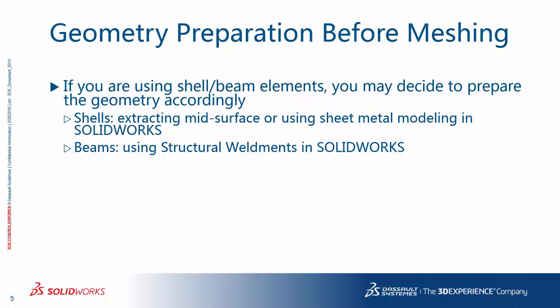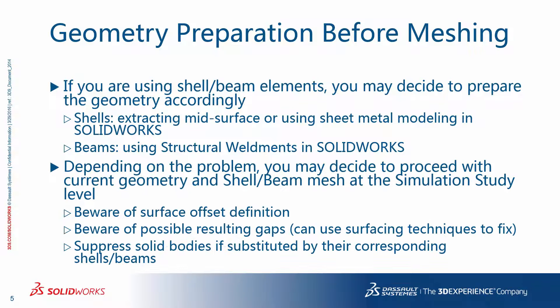Continuing on this topic, if you are using shell or beam elements, you may decide to prepare the geometry accordingly. For shells, it may be extracting mid-surfaces or using sheet metal modeling in SolidWorks. For beams, it could be using structural weldments in SolidWorks. Depending on the problem, you may decide to proceed with current geometry and shell/beam mesh at the simulation study level. If so, beware of surface offset definition. Beware of possible resulting gaps — you can use surfacing techniques to fix those. Do not forget to suppress solid bodies if they are substituted by the corresponding shells or beams.